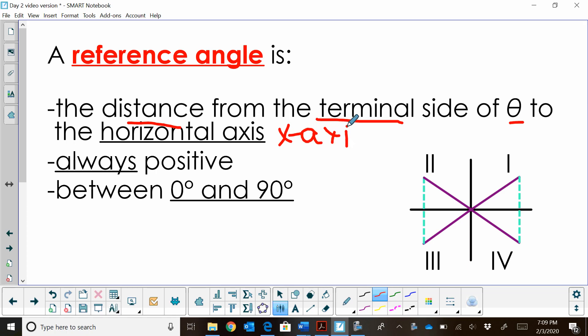A reference angle is always positive. And the reference angle will always be an acute angle, meaning it's going to fall between 0 and 90.